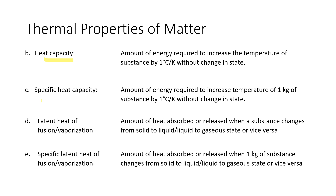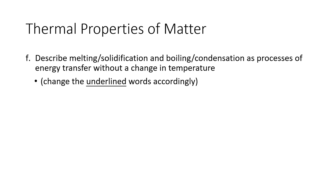Specific heat capacity is the amount of energy required to increase the temperature of one kilogram of a substance by one degree Celsius or one kelvin without changing state. Latent heat of fusion or vaporization is the amount of heat absorbed or released when a substance changes state from solid to liquid or liquid to gas, or vice versa. Specific latent heat of vaporization is the same but for one kilogram of substance. Note: with the word 'specific,' there should always be one kilogram of substance. If your textbook has different definitions, use those.